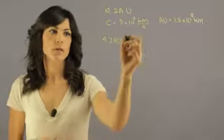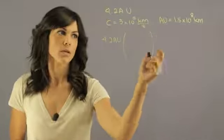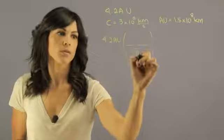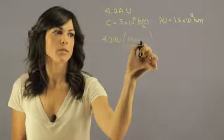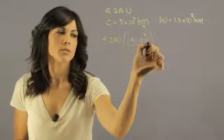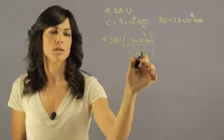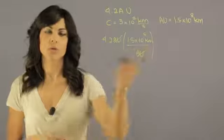So we need to match astronomical units here, and we know that one astronomical unit is equal to 1.5 times 10 to the 8 kilometers. So here we already got an astronomical unit turned into kilometers.